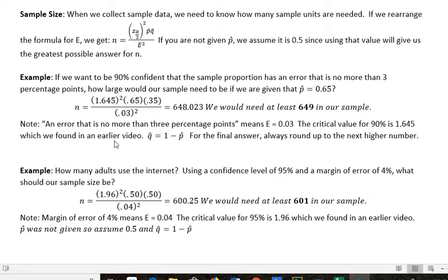So a few things about this. An error that is no more than 3 percentage points means our margin of error is 0.03. Our confidence level of 90% gives us the critical value of 1.645. That's an automatic thing, but go look it up if you need to see that again. And then q hat is always 1 minus p hat.